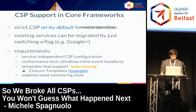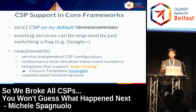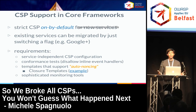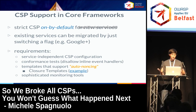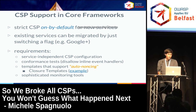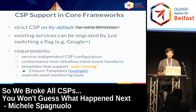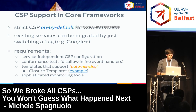Google+ is a prime example: we added CSP support to the framework, and since Google+ was built on that core framework, we just had to toggle a flag and it had strict CSP enabled — and so far nothing broke. The key requirements for this model are: a service-independent CSP configuration (previously with whitelists you had to tailor the policy to each application or even each page, which doesn't scale), and with nonce-based policies they're the same regardless of your service.